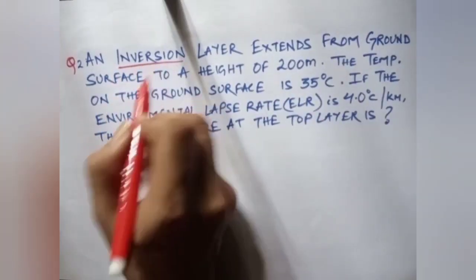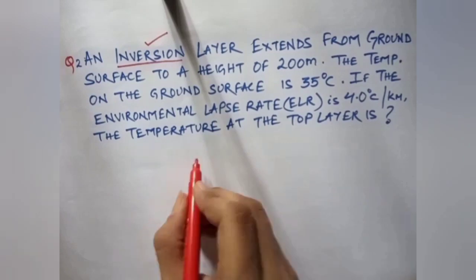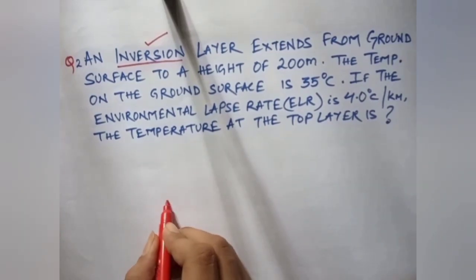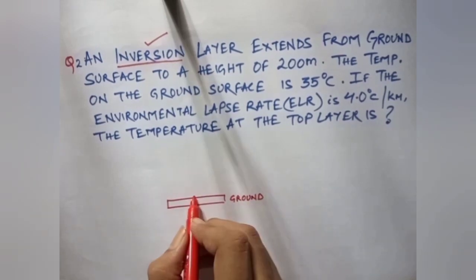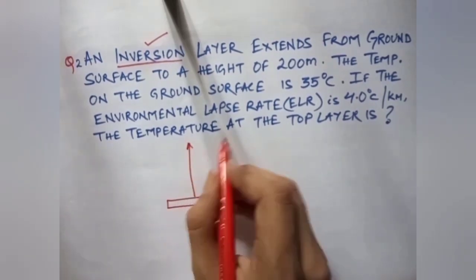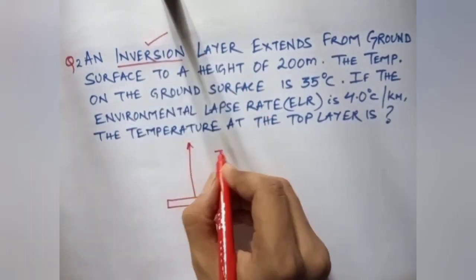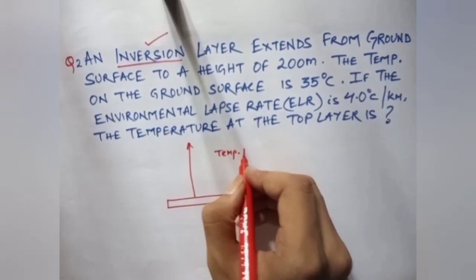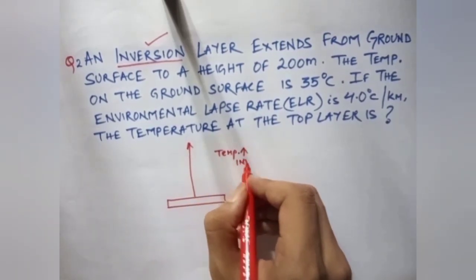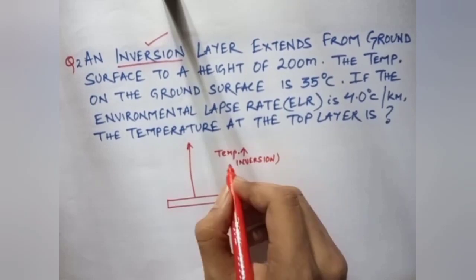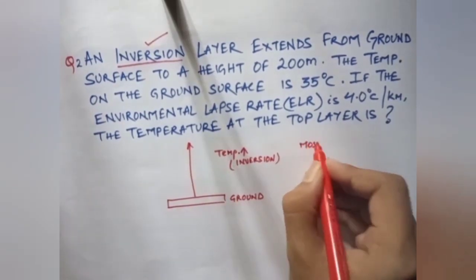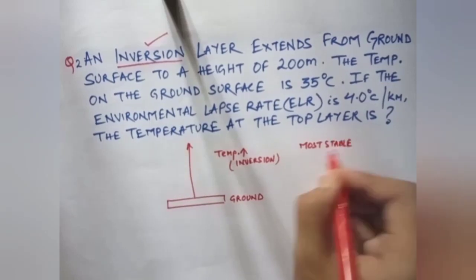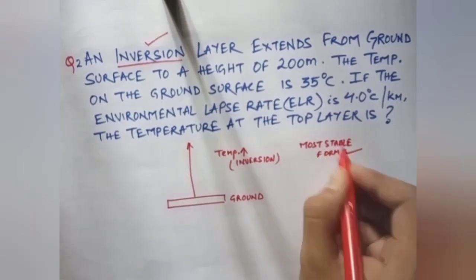In this question, mark the word inversion. So what is this inversion? It is actually a very vital concept if you are learning any plume behavior. For example, this is the ground part. If you move up, normally the temperature decreases. But in case of inversion, the temperature increases. If in question it is asking about inversion, then that means if we move from ground to the upper atmosphere, the temperature increases. So it is the most stable form of atmospheric profile.